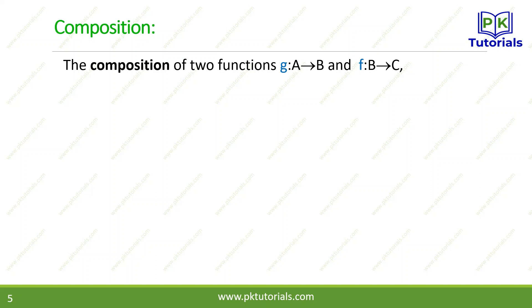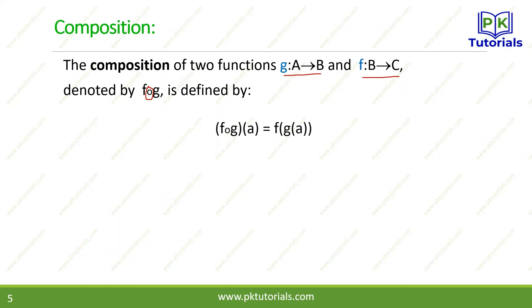What is composition? What does it mean by composition of two functions? We have two functions: G maps A to B, and F maps B to C. Denoted by a small circle, it means F composition with G is defined. F composite G of a means we apply function G first, and then apply function F.